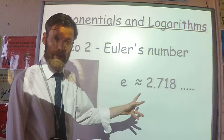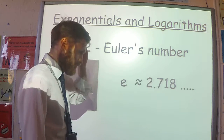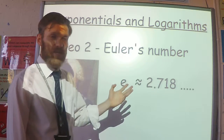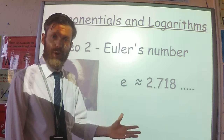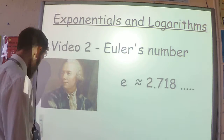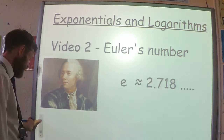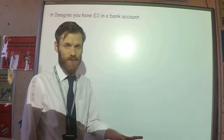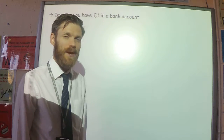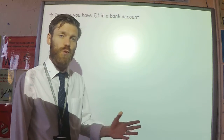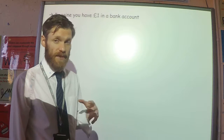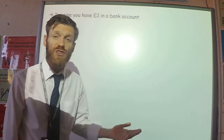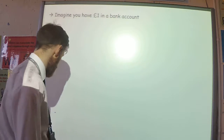We're going to see where that number comes from by looking at quite a simple problem. Imagine that you invest one pound in a bank, and the bank is very generous and decides to give you a 100% interest rate.